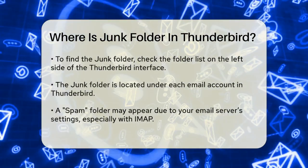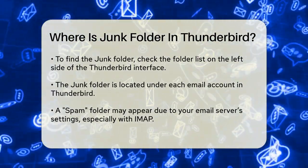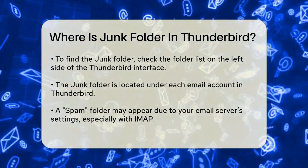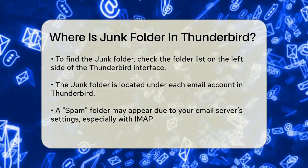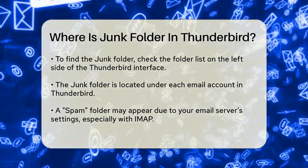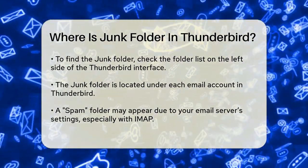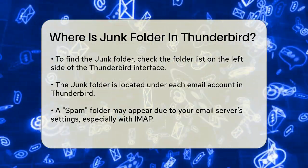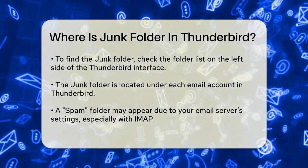To find the junk folder, go to your Thunderbird interface and look at the folder list on the left side. Under each of your email accounts, you should see a folder labeled junk. This is where Thunderbird will move emails it identifies as spam or junk.